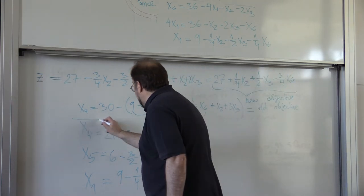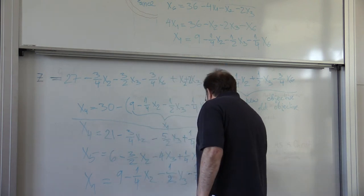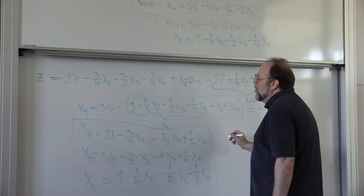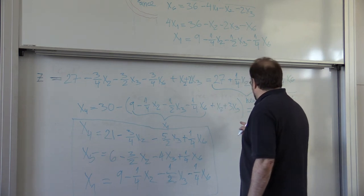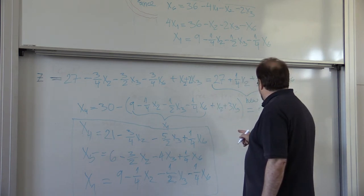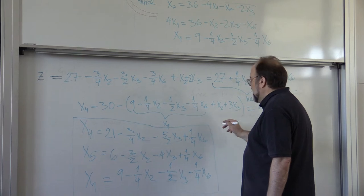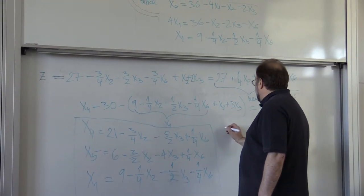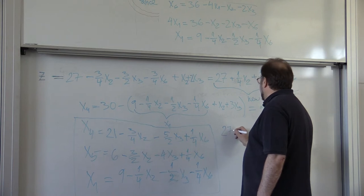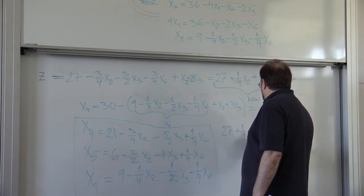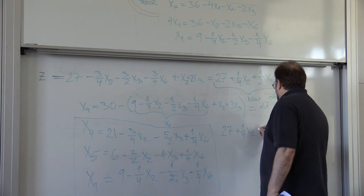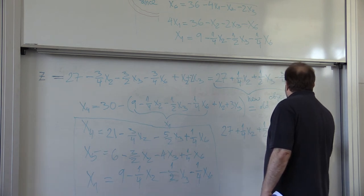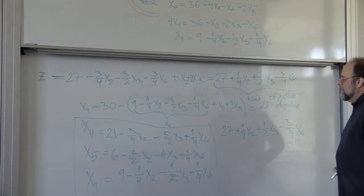So now these are our new constraints. And our new objective is this one. Let's see, where did I write it here. The new objective is 27 plus 1 quarter x2 plus 1 half x3 minus 3 quarters x6.